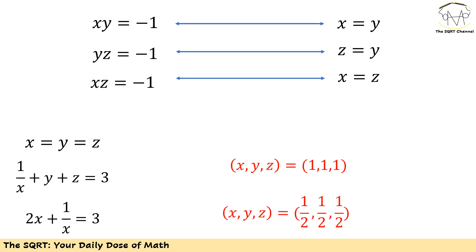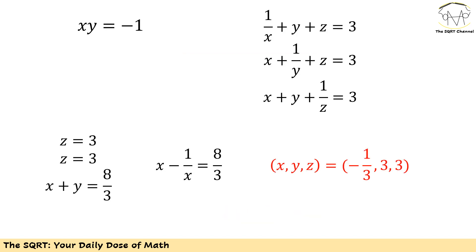For this particular case we can simplify the given equations and find the values of x, y, and z. Assuming x equals y equals z, the equation 1 over x plus y plus z equals 3 becomes 2x plus 1 over x equals 3. We get two cases: x equals 1, giving x=y=z=1, or x equals 1/2, giving x=y=z=1/2.